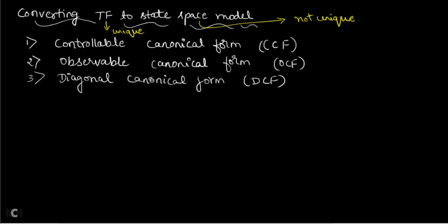That is why there are three methods of converting a transfer function to a state space model. The first method is the controllable canonical form (CCF). The state space model can also be represented as an observable canonical form (OCF). And there is a third format called the diagonal canonical form (DCF).